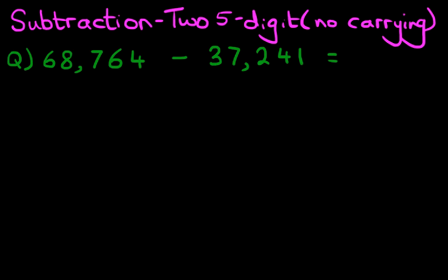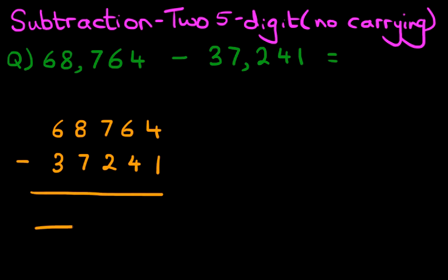So the first stage is, let's rewrite this question into the vertical format. Let's do that over here. We've got 68,764 minus 37,241. Nice, neat, straight columns.